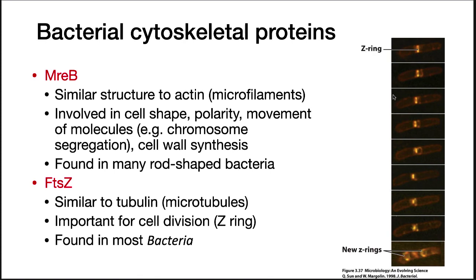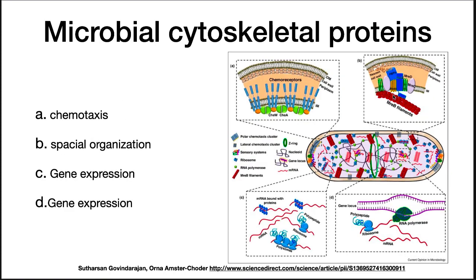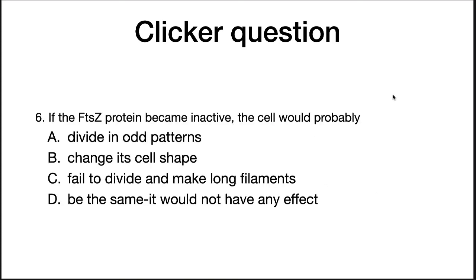Cytoskeletal proteins serve many different functions in the cell. They will be involved in chemotaxis, spatial organization such as cell wall synthesis, and gene expression. If the FtsZ protein became inactive, the cell would probably fail to divide and instead make long filaments — because FtsZ forms the Z-ring and is involved in cell division.